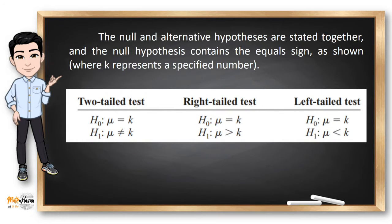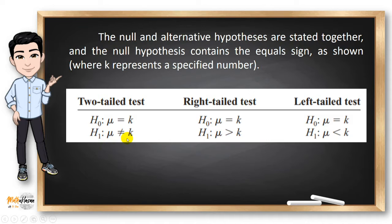The null and alternative hypothesis are stated together. We can always write the null hypothesis using the equal sign because most professional journals write it this way. When we test the null hypothesis, the assumption is that the mean, proportion, or standard deviation is equal to a given specific value. If the alternative hypothesis states that the population parameter is not equal to a specific value, it's called a two-tailed test. If the alternative is greater than, it's a right-tailed test. While if it's less than, it's a left-tailed test. We will discuss these types of tests further later in this video.